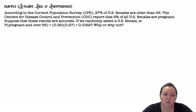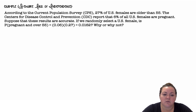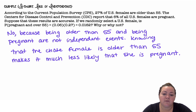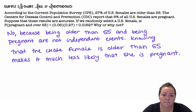Beware lack of independence. According to the current population survey, 27% of U.S. females are older than 55. The CDC reported that 6% of all U.S. females are pregnant. If we randomly select a U.S. female, is the probability of being pregnant and over 55 equal to 0.06 × 0.27 = 0.0162? We cannot say that, because being older than 55 and being pregnant are not independent events. Knowing that the chosen female is older than 55 makes it much less likely that she is pregnant. So if they're not independent events, you can't simply multiply their probabilities.